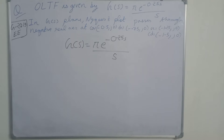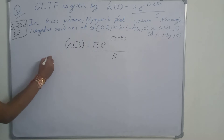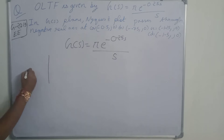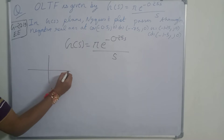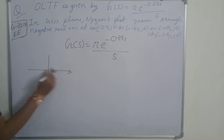This question is from GATE 2019 Electrical branch. G(s) is given like this. At the negative real axis — where the positive real axis is here and the negative real axis is here — we need to find the crossing point.